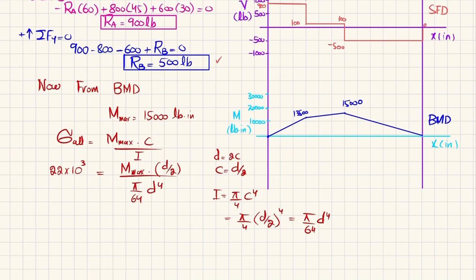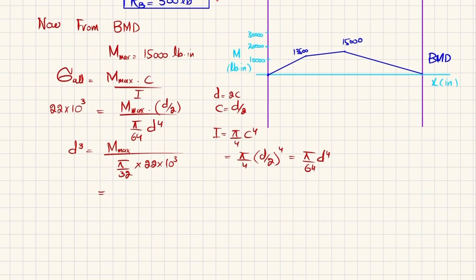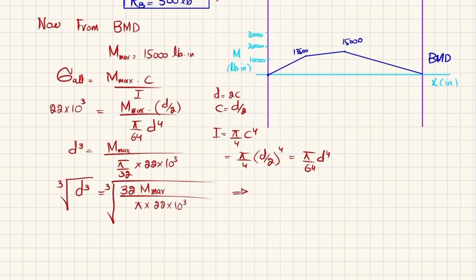From the bending stress formula, we get: d³ = 32 · M_max / (π × 22 × 10³). Substituting M_max = 15,000 pound-inches: d³ = 32 × 15,000 / (π × 22,000). Taking the cube root of both sides gives d = 1.908 inches. For safety, we round up to a diameter of 2 inches, and that is the answer.